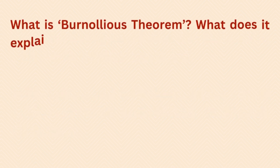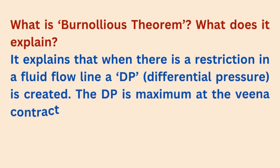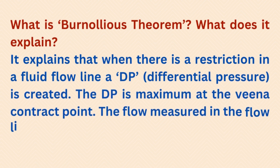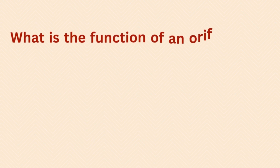What is Bernoulli's theorem and what does it explain? It explains that when there is a restriction in a fluid flow line, a differential pressure (DP) is created. The DP is maximum at the vena contracta point. The flow measured in the flow line is proportional to the square root of the DP measured, where k is a constant.